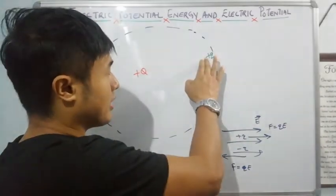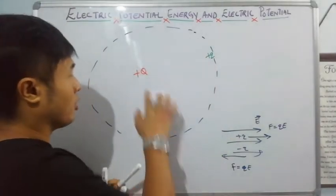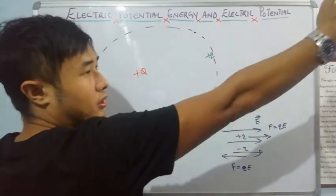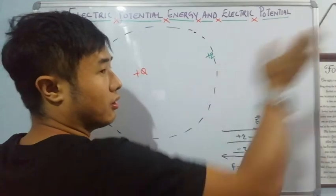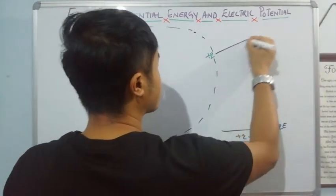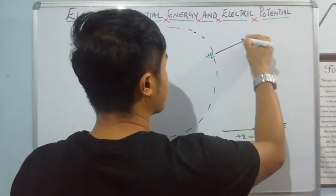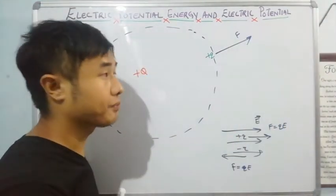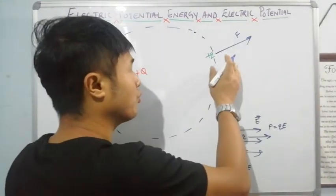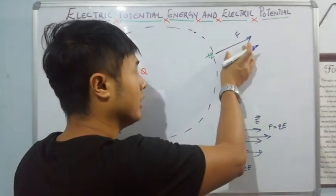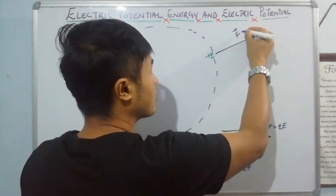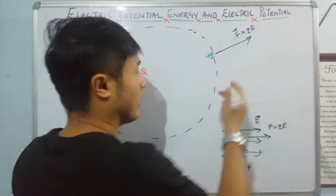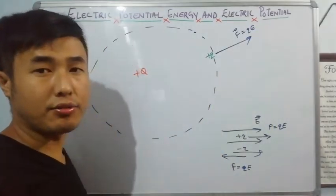So for a positive charge placed in the field, there is a repulsive force in the opposite direction. The force experienced is given by F vector equals QE. The electric field acts like a force on the placed charge.